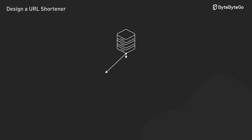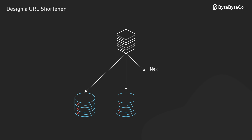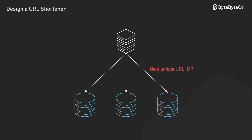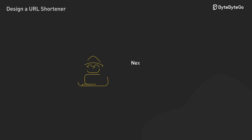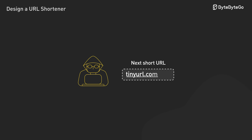The trade-off is that you need a way to generate unique numbers across multiple servers, which is its own engineering challenge. And there's a security issue: if someone figures out your pattern, they can guess the next short URL. But for most cases, this approach is much cleaner.